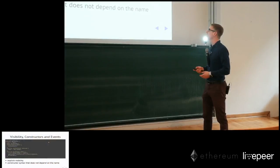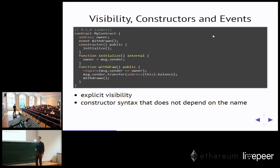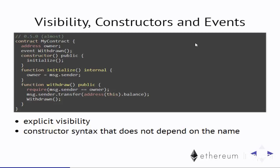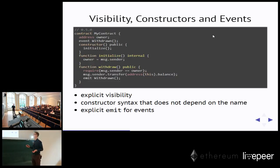Now you can change the name of the smart contract without having to change the name of the constructor. And then events — here we call an event; it looks very similar to a function call, but events are rather different. They don't actually execute any code, they just log information. Because of that, to make it explicit, we require an emit keyword to be used together with events. That's not a big security thing, but it's nice to have.